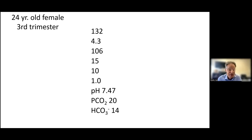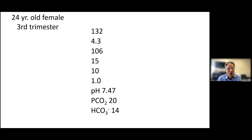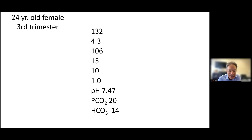The pH is 7.47, which follows from the Henderson-Hasselbalch equation — it can't be anything else with that PCO2 and bicarbonate. The patient also has some dysnatremia, which we won't focus on. The anion gap is normal. This is chronic respiratory alkalosis — not a mixed disorder.